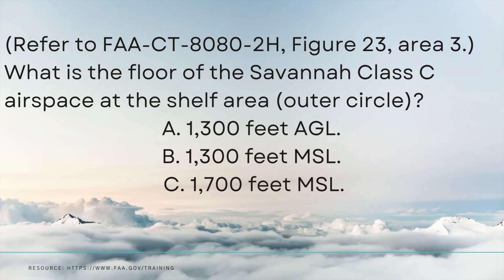In this next sample problem, it says refer to Figure 23, Area 3. What is the floor of the Savannah Class C airspace at the shelf area, also known as the outer circle? We have three choices: A) 1,300 feet AGL, B) 1,300 feet MSL, and C) 1,700 feet MSL. Let's go ahead and pull up Figure 23 and look at Area 3.